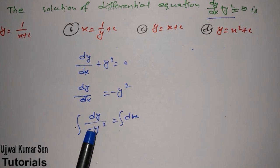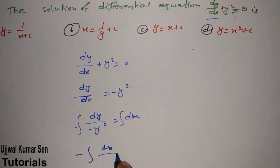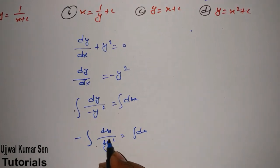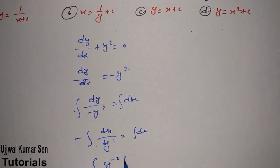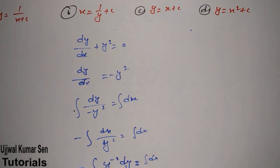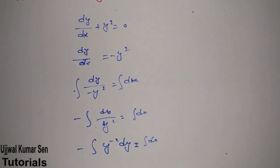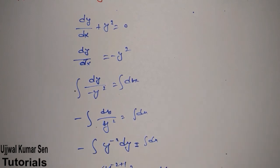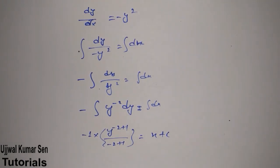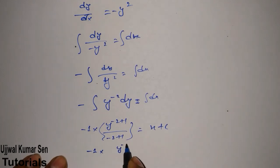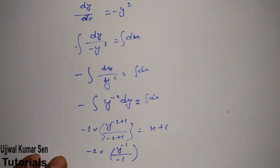If you are a beginner and don't know how to integrate this, take out distracting things like the constant minus sign. Rewrite 1/y² as y⁻², then apply the power rule: the integral of y⁻² is y⁻²⁺¹ / (-2+1), which gives -1 multiplied by y⁻¹, all plus c.